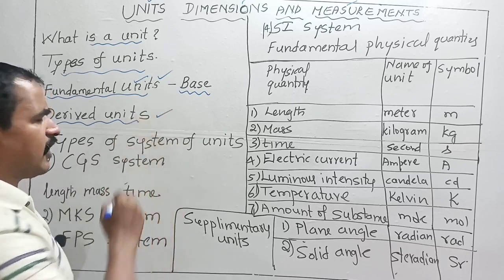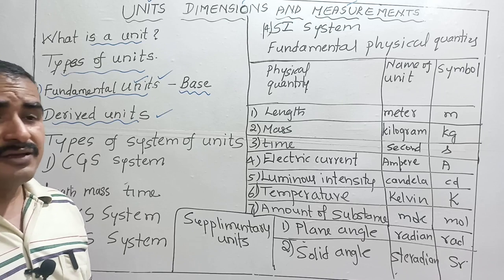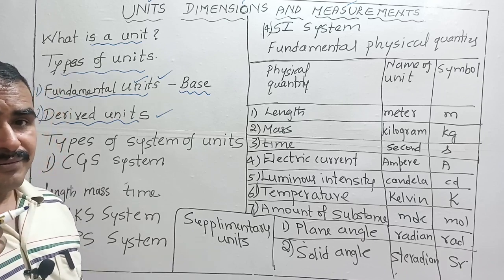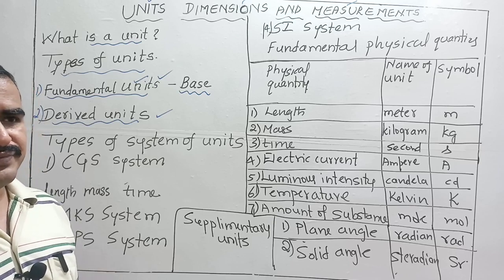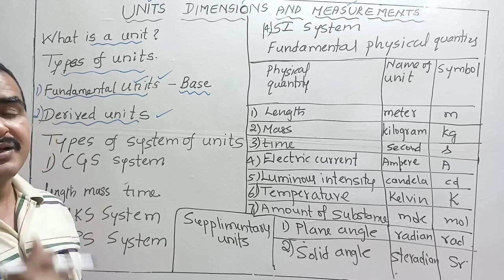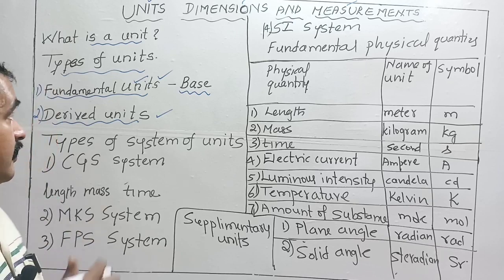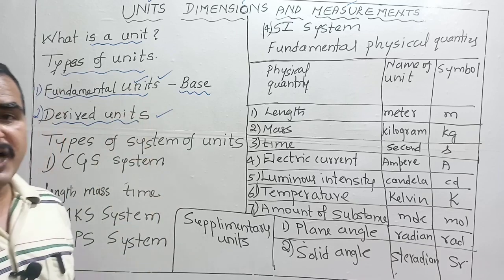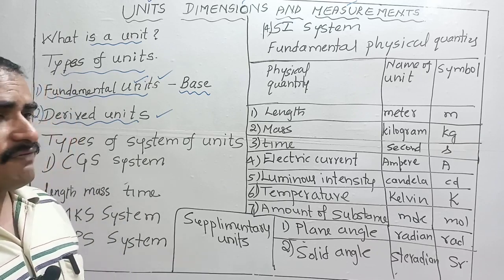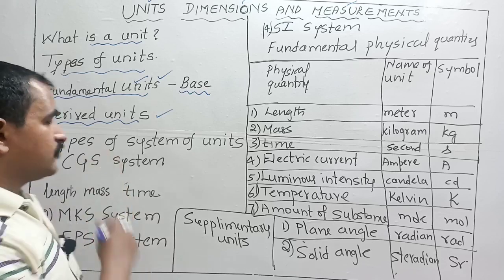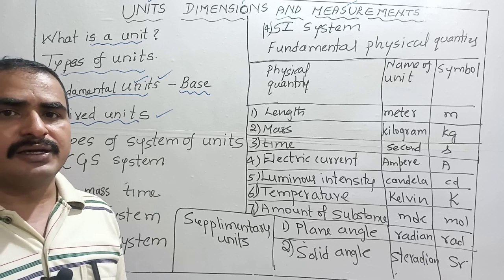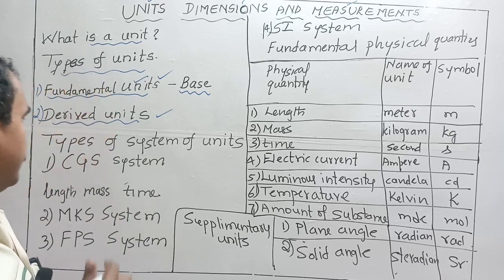There are many derived physical quantities. These are not fundamental or basic quantities — they depend on the base quantities. The units used to specify fundamental physical quantities are called base units or fundamental units, and the units used to express derived physical quantities are called derived units.